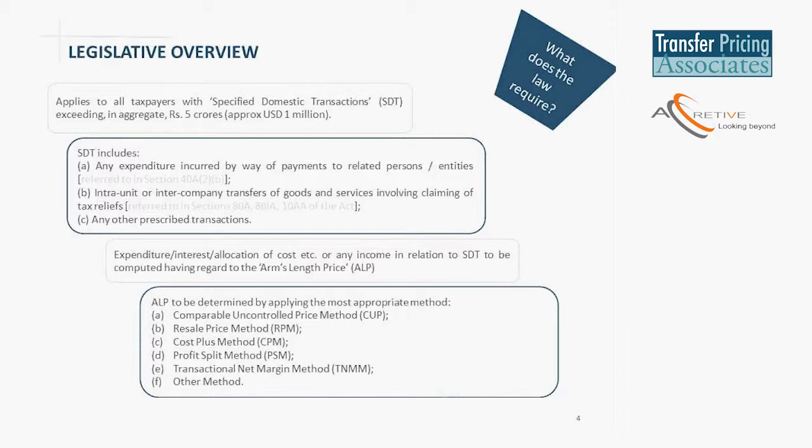The cost plus method is typically adopted by service providers. It looks at the cost base of the service provider and the markup that unrelated entities would charge on such cost base. The fourth method is the profit split method, really used in transactions involving intangibles, looking at how supply chain profits can be split amongst participating entities based on their contributions. The transactional net margin method looks at profit indicators at the net level and is practically the more commonly adopted method, because the data generally available in the public domain would be margins of listed entities, which is the information typically adopted to test the arm's length standard.